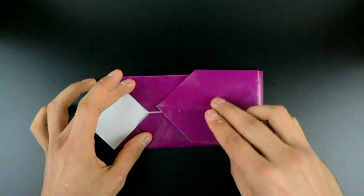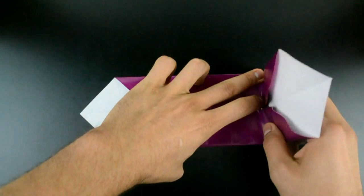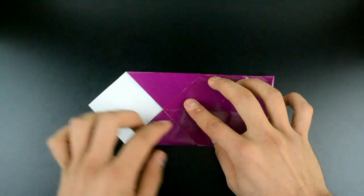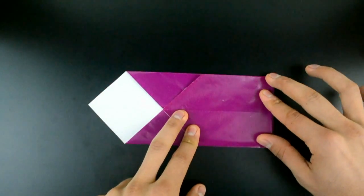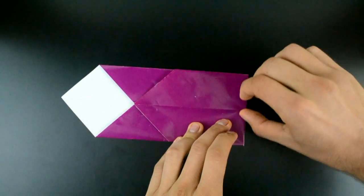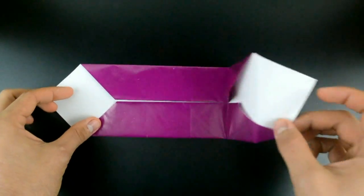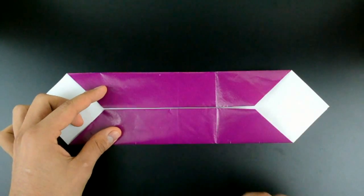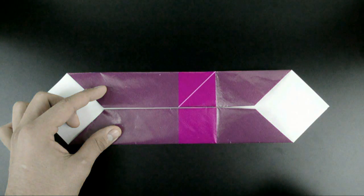Just like this. Now unfold and on the middle we have two squares. Let's fold in half diagonally both of them. Like this image.